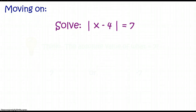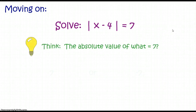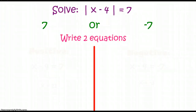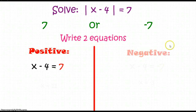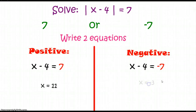If we move on, this time we actually have to solve an equation. We're asking ourselves: the absolute value of what is equal to 7? There are two answers — 7 or negative 7 — which means we're going to write two equations. The first takes what's inside the absolute value symbol and sets it equal to positive 7. The second sets it equal to negative 7. Our two solutions would be 11 and negative 3.